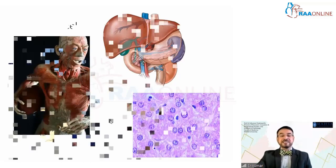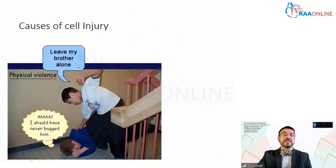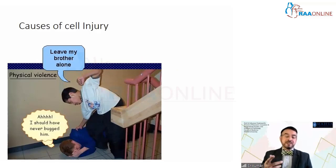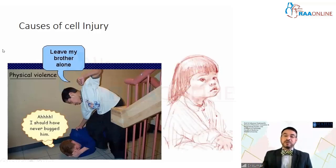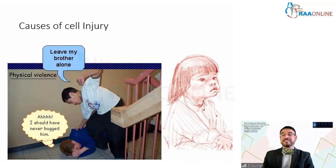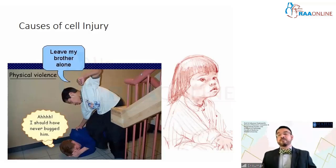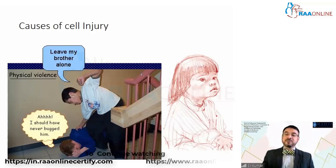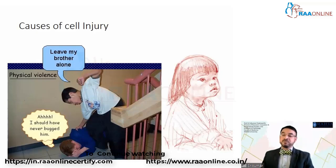When anything happens to the cell that damages it, it leads to disease, cell injury, and cell death. What is the extent to which a cell can control itself before getting damaged? There are numerous causes of cell injury — it could be anything as simple as physical violence where somebody gets hurt, or anything as complicated as a subtle genetic mutation where a child is born apparently normal but as they grow up, manifests with mental retardation. At that point we realize there is something wrong — a damage in the DNA of the cell that causes injury. We call this a mutation.